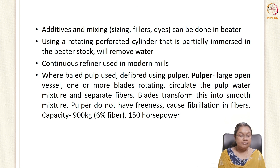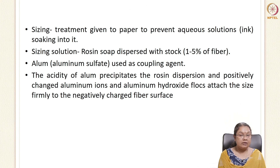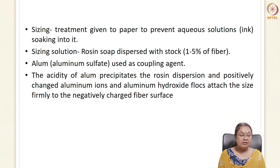Papers are subjected to sizing — a treatment to prevent aqueous ink solutions from being soaked into the paper, keeping print clear and legible. For sizing, rosin soap is dispersed in stock at one to five percent of fiber content. Aluminum sulfate or alum is used as a coupling agent; its acidity precipitates the rosin dispersion, and positively charged aluminum ions and aluminum hydroxides flock to the negatively charged fiber surface.